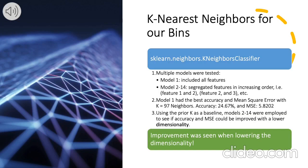Now that we have our bins created, we can use the k-nearest neighbors algorithm. Using scikit-learn's KNeighborsClassifier, we generated models on our dataset. We split this into two sections. First, we included all of the features — after preprocessing, we were left with 15 features, which is what model 1 consisted of. Running from 1 neighbor all the way to 100, we saw that with k equals 97, the accuracy was at its peak of 24.67%, and the MSE was at its lowest of 5.8202.